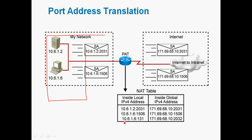The port number can also be changed. Here we can see 10.6.1.6 with port number 131 — it is first translated to the public IP address 171.69.68.10, and then the port number is also translated to 2032.